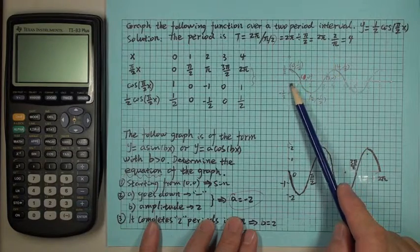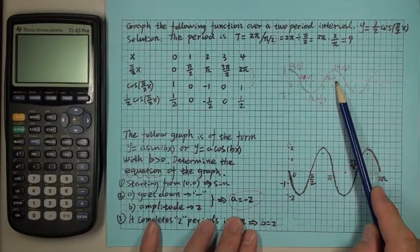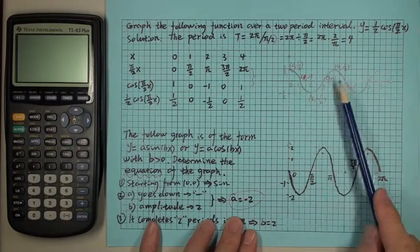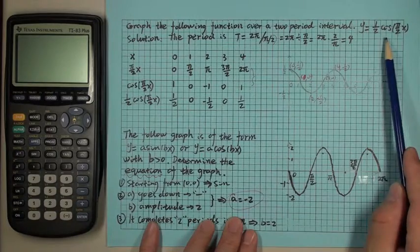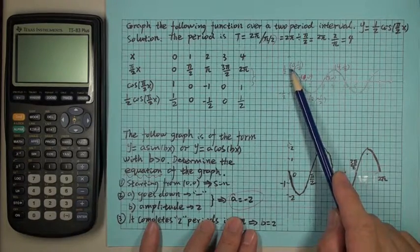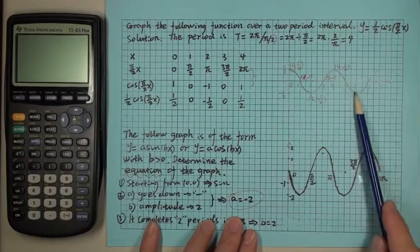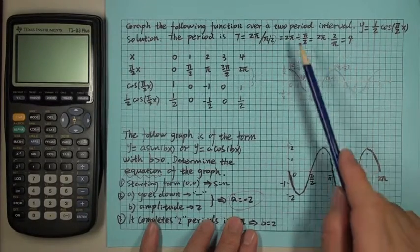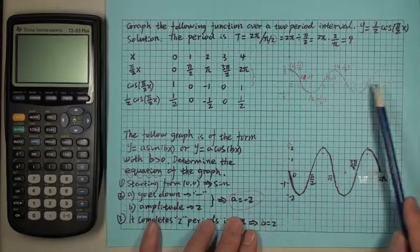That means from zero to four, it completes one period. And from zero to eight, the function should complete two periods. So that's the two-period interval from zero to eight.